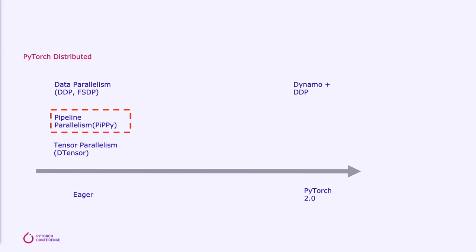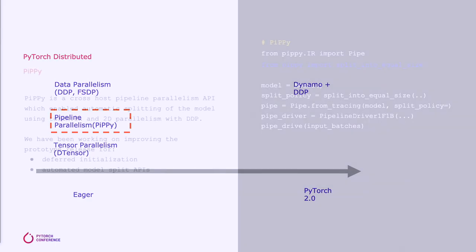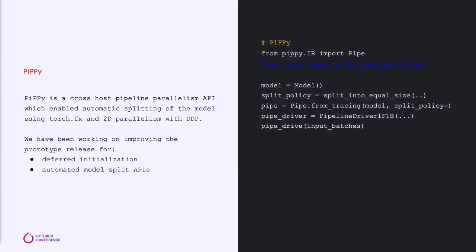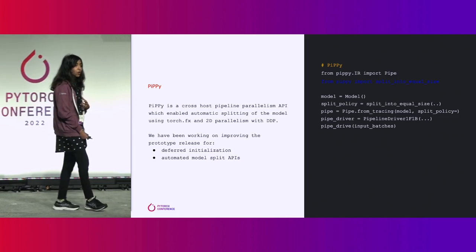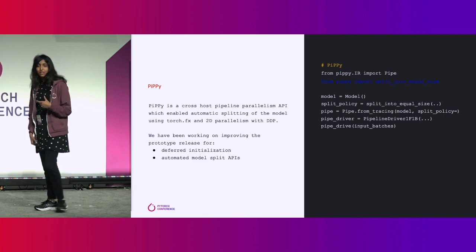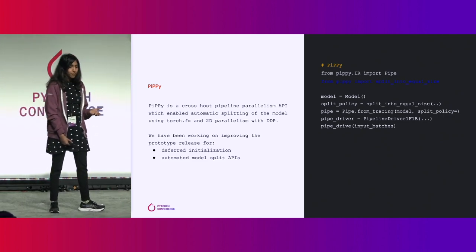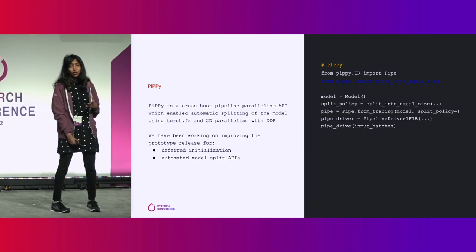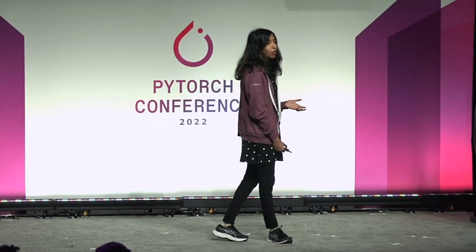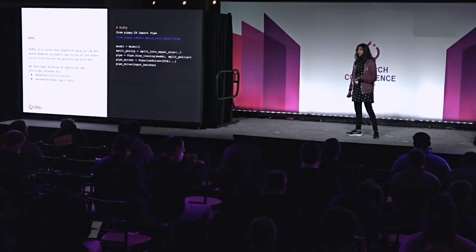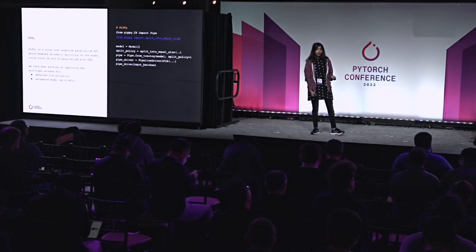To enable pipeline parallelism, we've implemented a prototype API called PiPPy. The PiPPy API enables your model to be converted into a graph, sharded using user-annotated split points, and enables micro-batching and specialized scheduling of forward and backward passes needed for pipeline parallelism. We've been working on improving PiPPy such that we now provide deferred initialization, so you can initialize the specific stage on the GPU, enabling larger models to use PiPPy. We've also been working on enabling better automated split APIs so users can specify the number of stages or the size of the stage, and we can automatically shard your model. PiPPy is a cross-host pipeline parallelism solution and also supports complex architectures like skip connections and shared params.